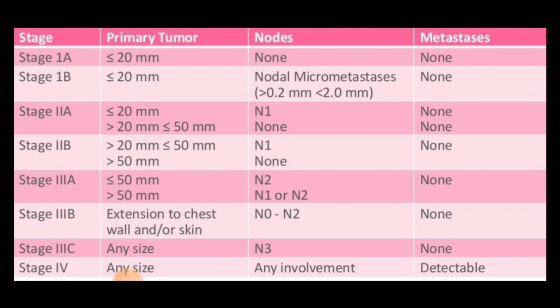Stage 1B means when the primary tumor size is less than 2 centimeters and there can sometimes be nodal micrometastasis. For ease of remembering, we remember stage 1 as T1 lesions without any nodal involvement or metastasis.